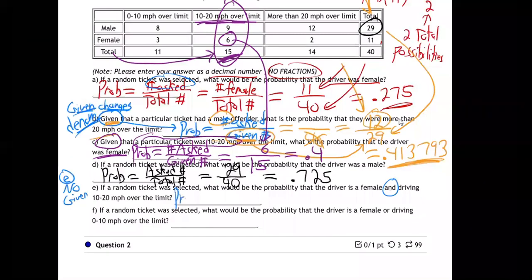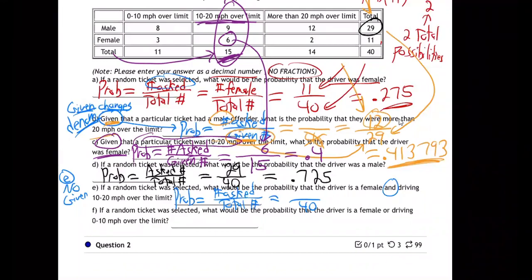So the probability is going to be the number being asked for over the total number. The bottom is going to be 40 again because there's no given here — no changing the denominator, the denominator is back to 40. But what goes in the top? Female and driving 10 to 20 over the limit — how many fit that category? How many are both female and driving 10 to 20 over the limit?